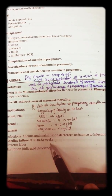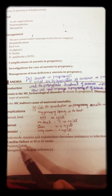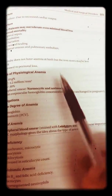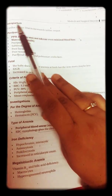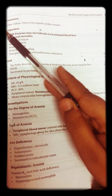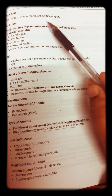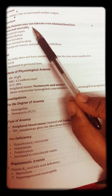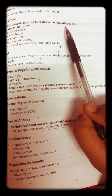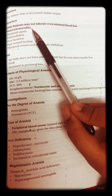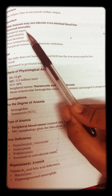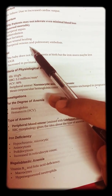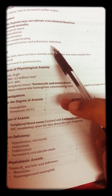Antenatal complications also include cardiac failure at 30 to 32 weeks, preterm labor, and abruption due to folic acid deficiency. Intrapartum complications include cardiac failure due to increase in cardiac output. Postpartum complications include PPH where patients may not tolerate even minimum blood loss, puerperal sepsis, sub-involution, poor lactation, poor wound healing, and puerperal venous and pulmonary embolism.